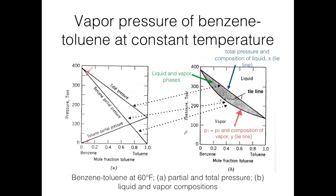We can look at this diagram in terms of its phases. This side is the vapor phase while this side is the liquid phase. The total pressure and composition of liquid x is called the liquid tie line, while the composition of the vapor, p1 plus p2, is called the vapor tie line. The line connecting the vapor tie line and the liquid tie line is the tie line. Any composition within the vapor range is in the vapor phase, while any composition in the other area is in the liquid phase.